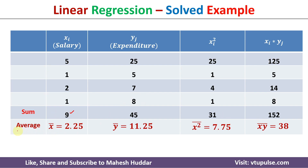Once we have the summations, we calculate the means. x̄ = 9/4 = 2.25. The mean of y = 45/4. The mean of x² = 31/4. The mean of x*y = 152/4 = 38.